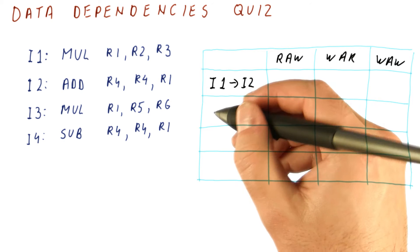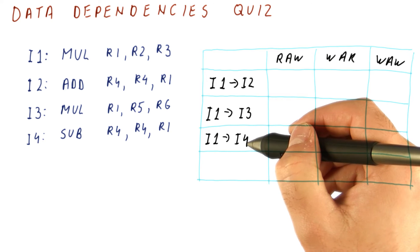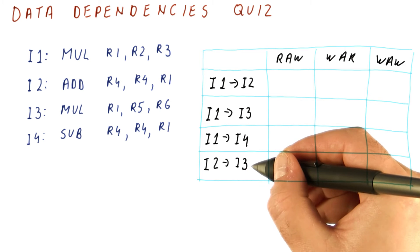You need to do that also for I1 to I3, I1 to I4, so is there a dependence from I1 to I4, and from I2 to I3.